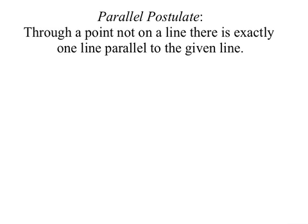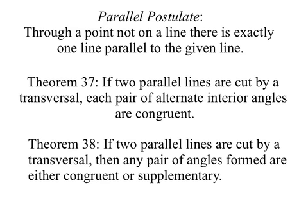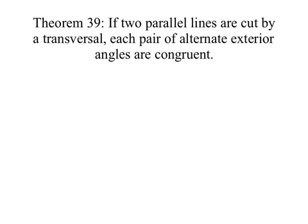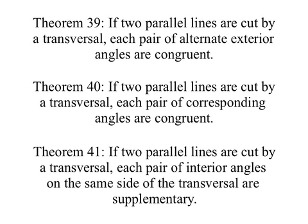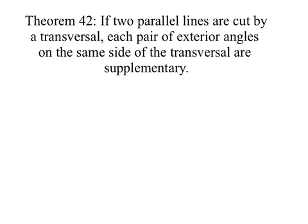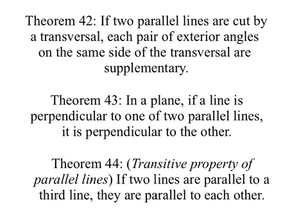In this lesson, we looked at the parallel postulate: through a point not on a line, there is exactly one line parallel to a given line. Theorem 37: if two parallel lines are cut by a transversal, each pair of alternate interior angles are congruent. Theorem 38: if two parallel lines are cut by a transversal, any pair of angles formed are either congruent or supplementary. Theorem 39: each pair of alternate exterior angles are congruent. Theorem 40: each pair of corresponding angles are congruent. Theorem 41: each pair of interior angles on the same side of the transversal are supplementary. Theorem 42: each pair of exterior angles on the same side of the transversal are supplementary. Theorem 43: in a plane, if a line is perpendicular to one of two parallel lines, it is perpendicular to the other. Theorem 44: the transitive property of parallel lines — if two lines are parallel to a third line, they are parallel to each other.